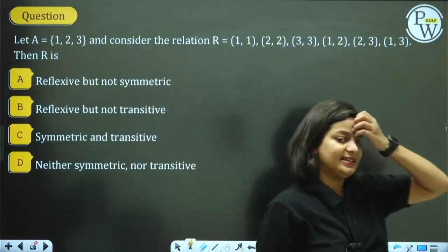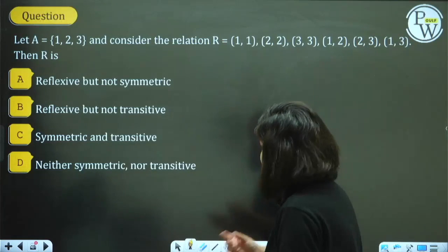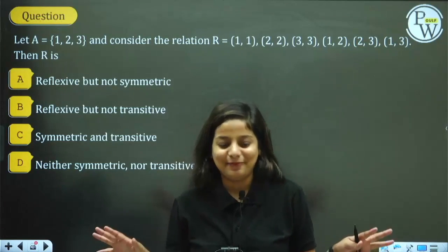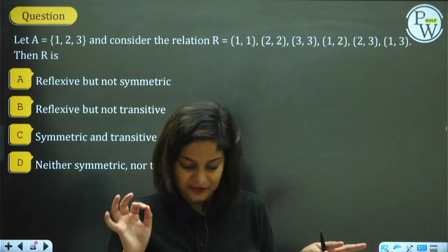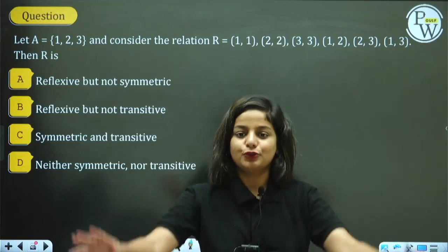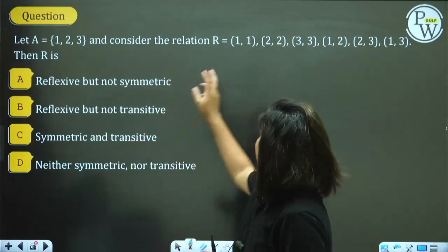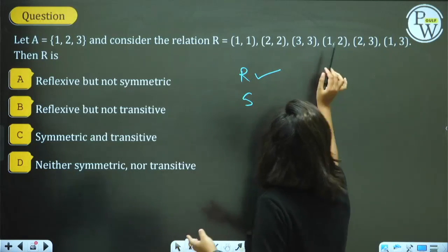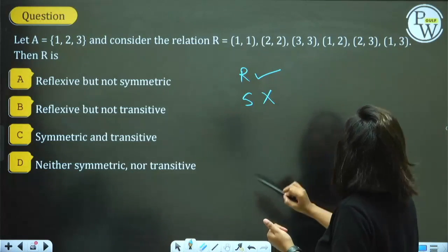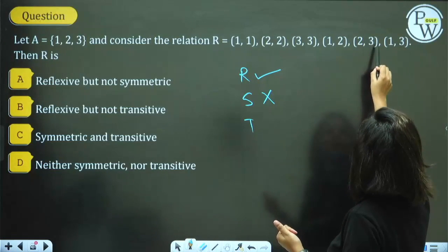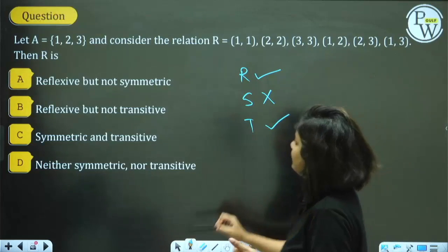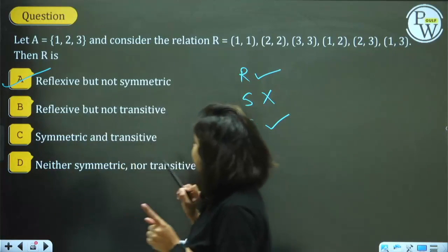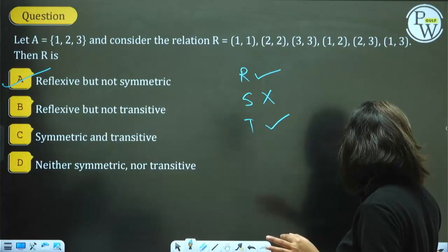Practice question: Set A = {1,2,3}, relation R is given. Is it reflexive, symmetric, transitive? Check: (1,1), (2,2), (3,3) are all there — it is reflexive. Is (1,2) there? Yes. Is (2,1) there? No — not symmetric. Transitive: (1,2) there, (2,3) there, is (1,3) there? Yes — it is transitive. So this relation is reflexive and transitive but not symmetric. Option A is the best match.